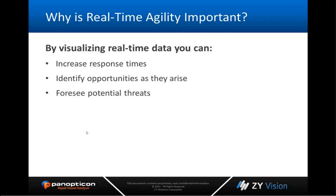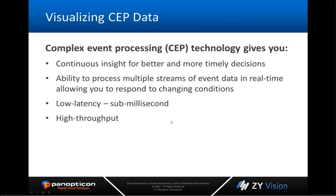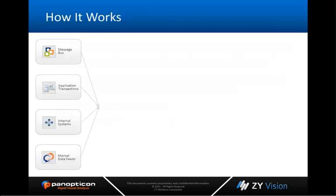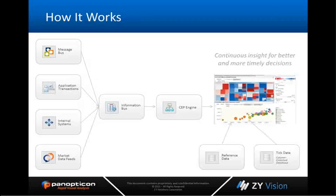One of the very compelling and strong points about Panopticon is its ability to analyze real-time data. By analyzing real-time data, you can increase response times and make proactive decisions rather than reactive decisions. You can foresee potential threats and identify opportunities as they arise. Real-time data is processed through what we call a CEP, or complex event processing engine, which continues to feed data as it happens. It has the ability to process multiple different data streams in real time with very low latency — sub-millisecond throughput and very high throughput.